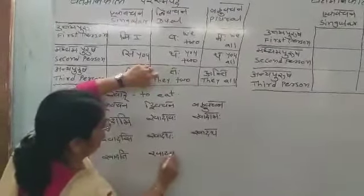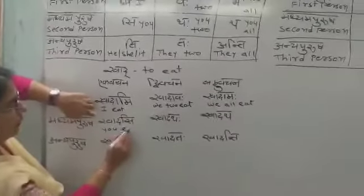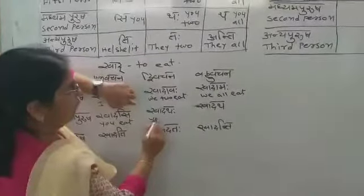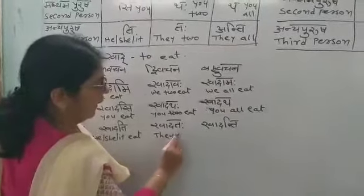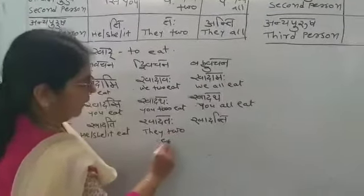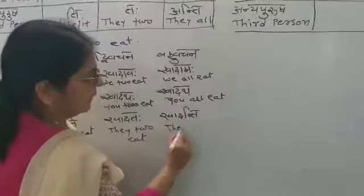So: 'khadasi' means only you eat. 'Khadathah' means you two eat. 'Khadatha' means you all eat. 'Khadati' means either he or she or it eats. 'Khadatah' means they two eat. And 'khadanti' means they all eat.